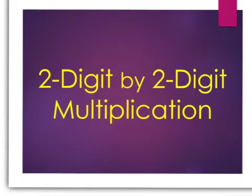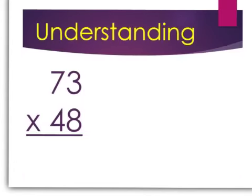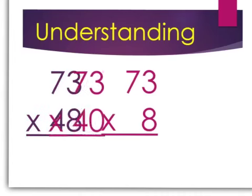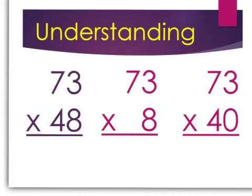This video is about 2-digit by 2-digit multiplication. In our example, we have 73 times 48. What we'll do is multiply 73 times 8, then 73 times 40, and add those two together. Let's take a look.